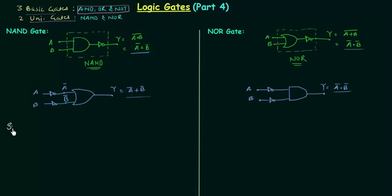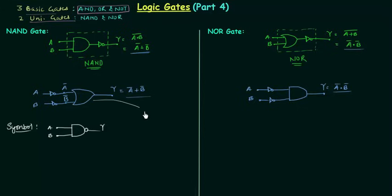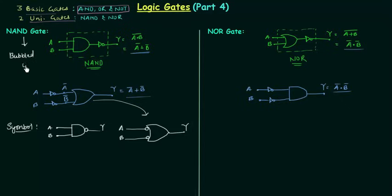Now we will move to symbols. For the NAND gate symbol: it is represented as an AND gate with a small bubble at the end. The small bubble represents complementation. The 2 inputs are A and B, and Y is the output. To represent the alternative arrangement, we make an OR gate with 2 bubbles on the inputs. Because of this we also call the NAND gate a bubbled OR.